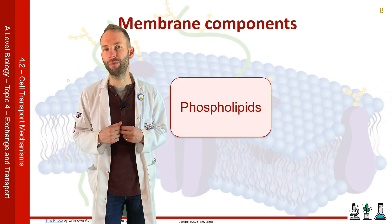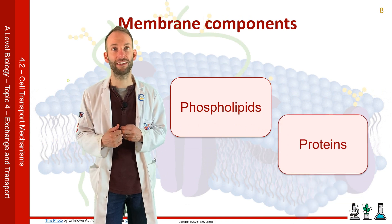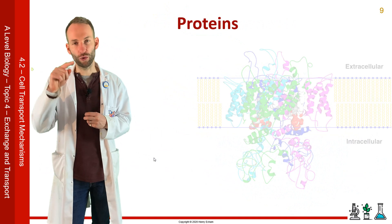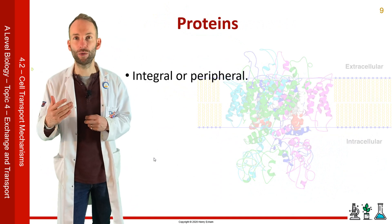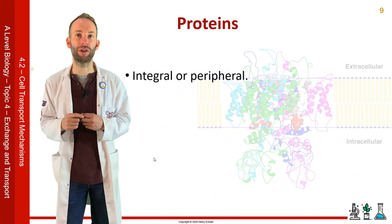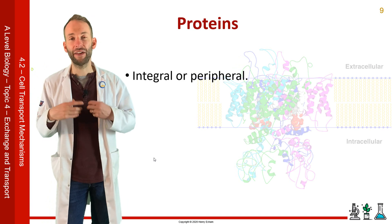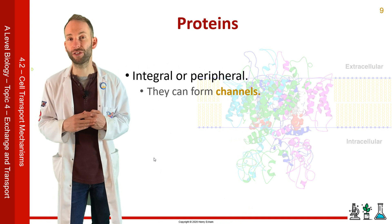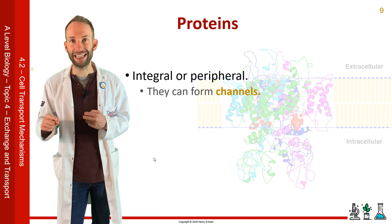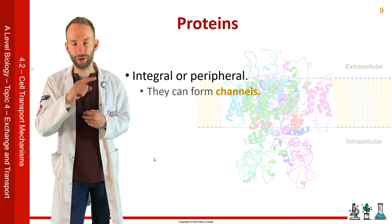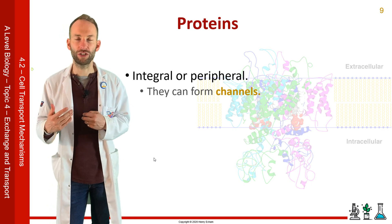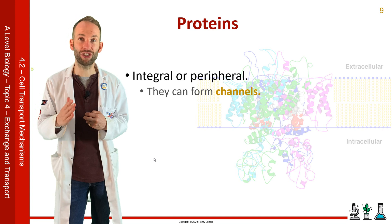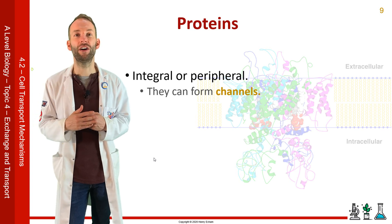What about the other major structural component of the membrane? The proteins. These are positioned in the membrane. They can either go all the way through the membrane, which is what we call an integral protein, or they can just go on the outer part of the membrane, which is called a peripheral protein. They have lots of jobs to do. They can form channels to allow certain molecules to pass through — not everything can just squeeze through the membrane. These protein channels are part of how the membrane controls what goes in and out of a cell.